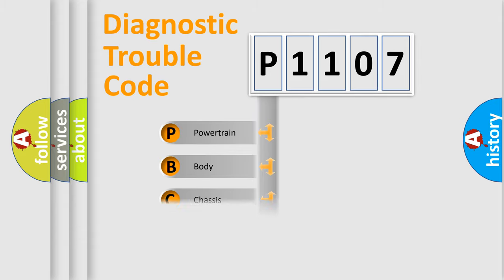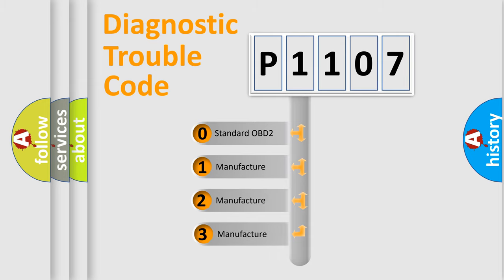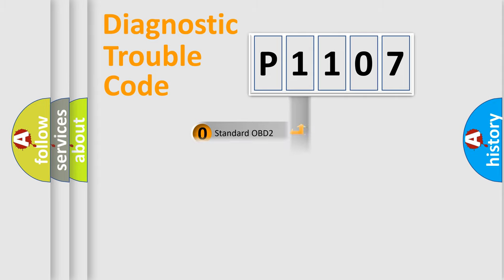Powertrain, Body, Chassis, Network. This distribution is defined in the first character code. If the second character is expressed as zero, it is a standardized error. In the case of numbers 1, 2, 3, it is a more prestigious expression of the car-specific error.